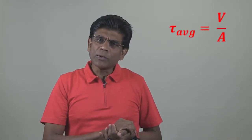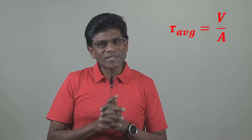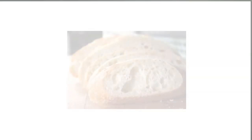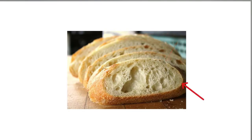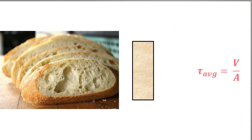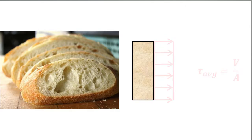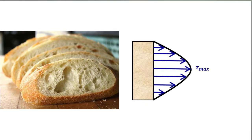Average shear stress is equal to shear force over area. But the average shear stress equation is not accurate. For example, the shear stress at the top or bottom of the body is equal to zero, because there is no cross-sectional area right above the top or below the bottom, so there is no shear at these locations. But the equation indicates the stress is uniform from top to bottom. In reality, the shearing stress changes from zero at the top or bottom to a maximum value at the neutral axis.